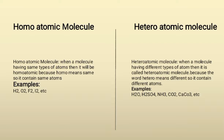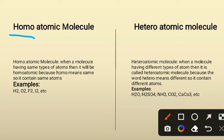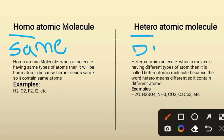What are homoatomic molecules? Homo means same and hetero means different, so both are different from one another. A homoatomic molecule is when a molecule has the same type of atoms — it is called a homoatomic molecule because homo means same, so it contains the same atoms.